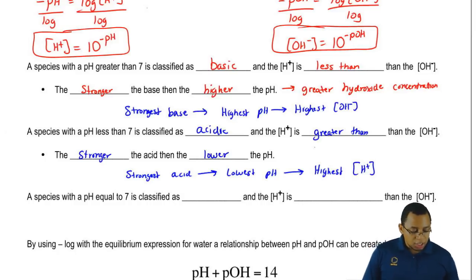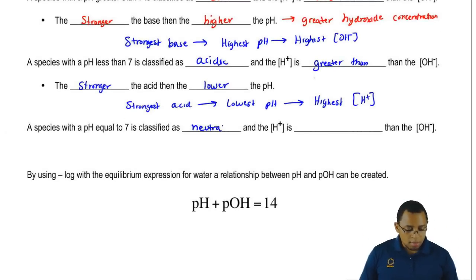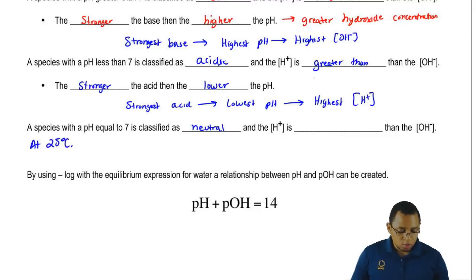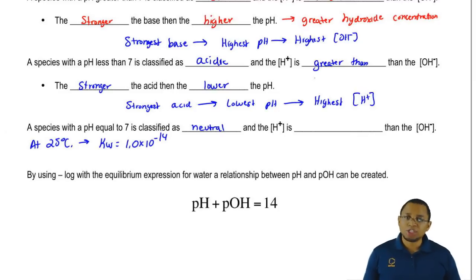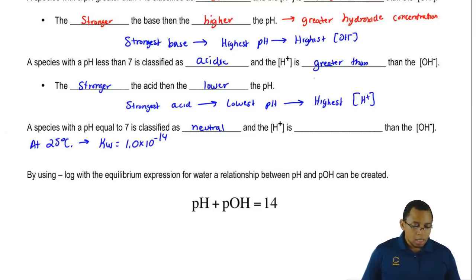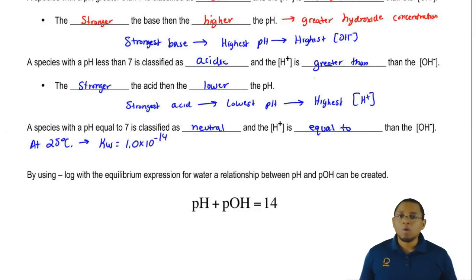Finally, a species with a pH equal to 7 is neutral. Remember, this is only true at 25 degrees Celsius, because at 25 degrees Celsius, Kw equals 1.0 times 10 to the negative 14. If the temperature were to change, that would change our Kw, and then neutral pH would become a new number — it doesn't always equal 7. If you're neutral, then your H-plus concentration is equal to your OH-minus concentration.